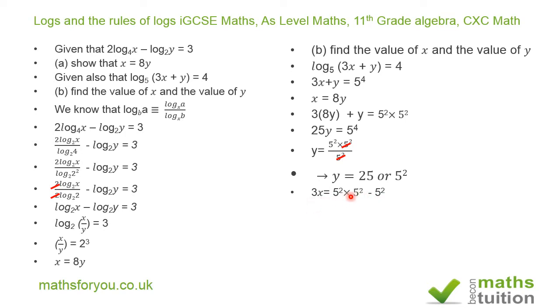Before we do that, we can factorize this bit. So we've got 3x equals 5 squared times (5 squared minus 1). And 5 squared minus 1 is 24. If we divide both sides by 3, we have x equals 25 times 24 divided by 3. That's 8 times 25, and x is 200. So y is 25 and x is 200.